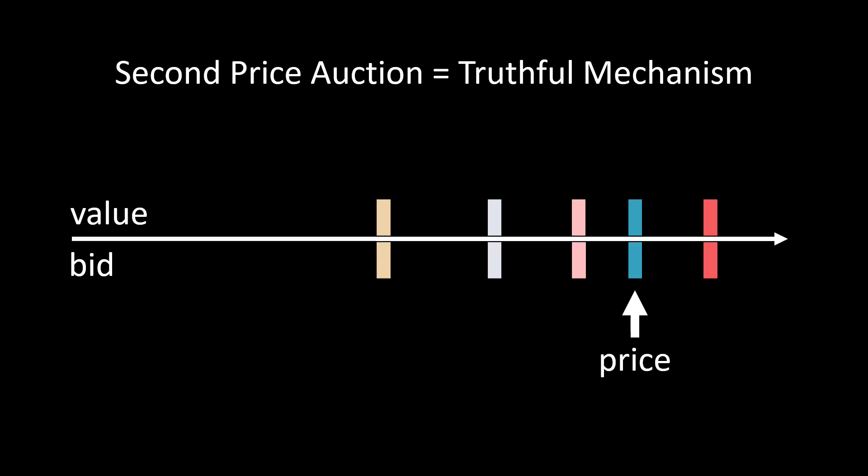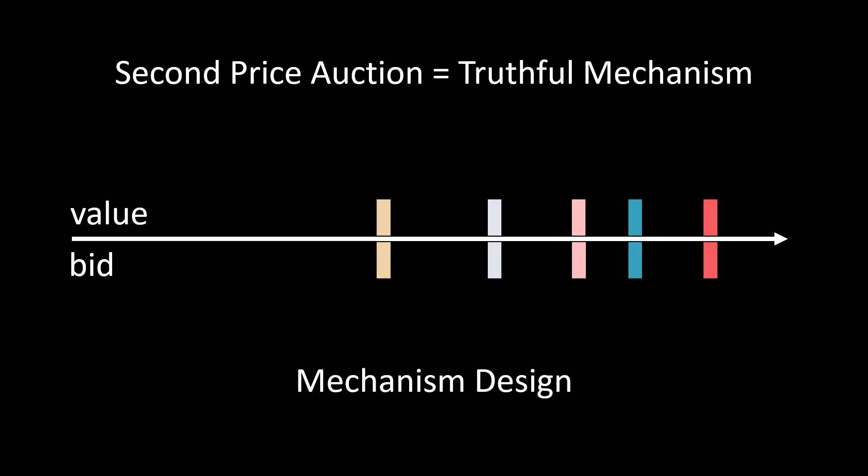Mechanism design is in general a fascinating area in game theory. The idea is to come up with a procedure that provides some nice guarantees. Usually a mechanism designer would offer incentives, for example payments or subsidies. Or the mechanism designer might threaten with punishments, for instance fines or even prison. Using incentives we can create a mechanism which for instance has a low price of anarchy.